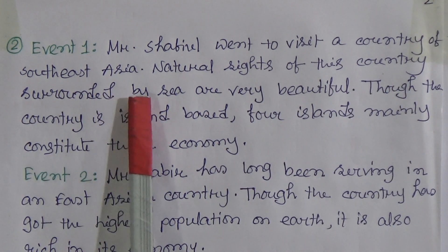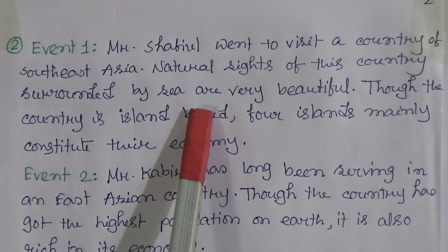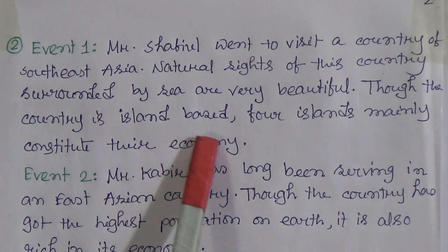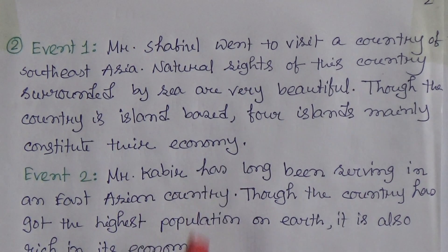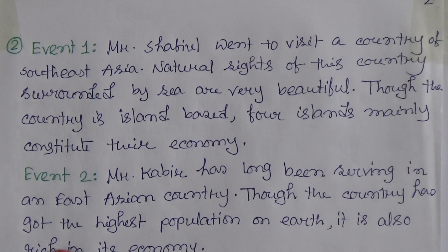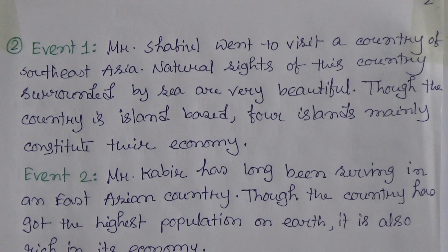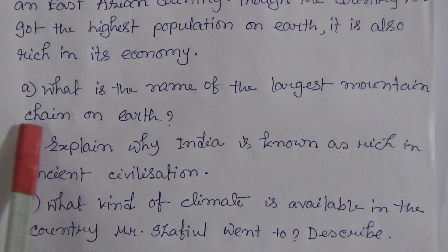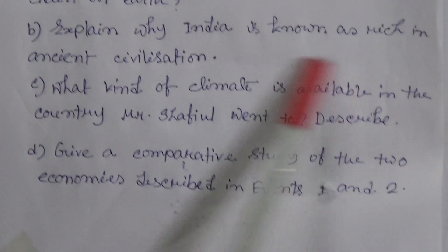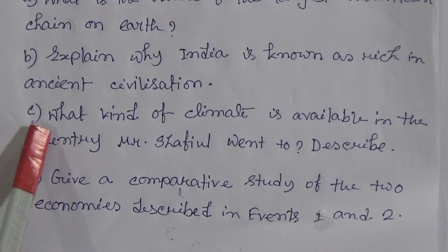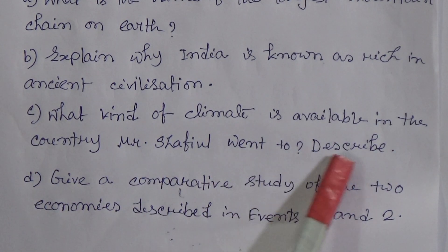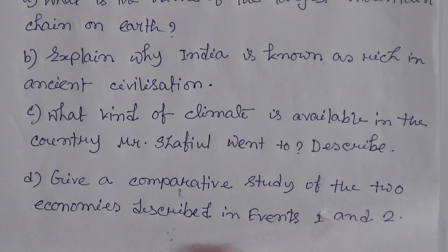Question d: Explain the importance of friendship and cooperation between Bangladesh and the country visited by Onindo. The second question — Event one: Mr. Shupil went to visit a country of Southeast Asia. Natural sides of this country surrounded by sea are very beautiful. Though the country is island-based, four islands mainly constitute their economy. Event two: Mr. Kobe has long been serving in an East Asian country. Though the country has the highest population on earth, it is also rich in its economy. Question a: What is the name of the largest mountain chain on earth? Question b: Explain why India is known as rich in ancient civilization. Question c: What kind of climate is available in the country Mr. Shupil went to? Question d: Give a comparative study of the two economies described in events one and two.